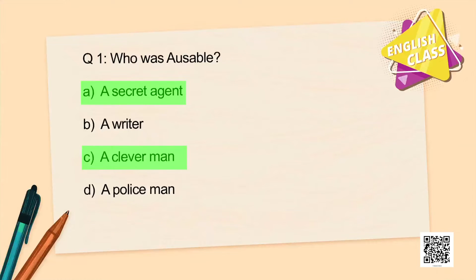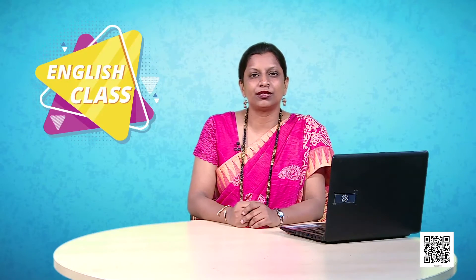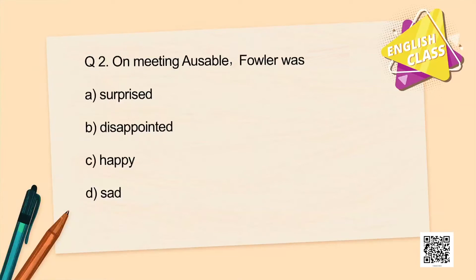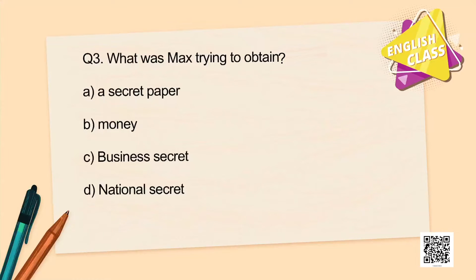You are right — he was a secret agent. But please pay attention to option C — he was also a clever man. So MCQs may have more than one correct option. Question number two: On meeting Ausable, Fowler was surprised, disappointed, happy, or sad — what was he? Correct — Fowler was disappointed. Question number three: What was Max trying to obtain?